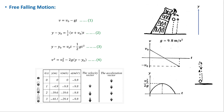Then the velocity starts to increase in the negative y direction until it reaches the same magnitude as the initial speed. This graph shows how the displacement y varies with t squared.